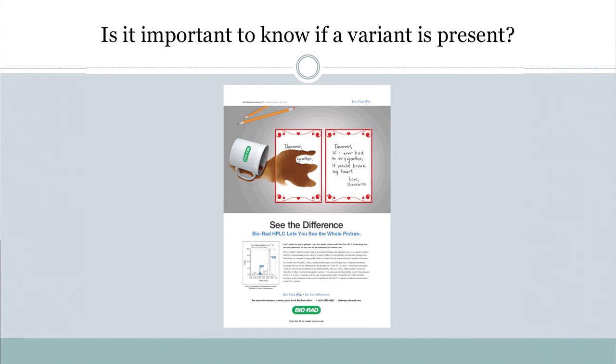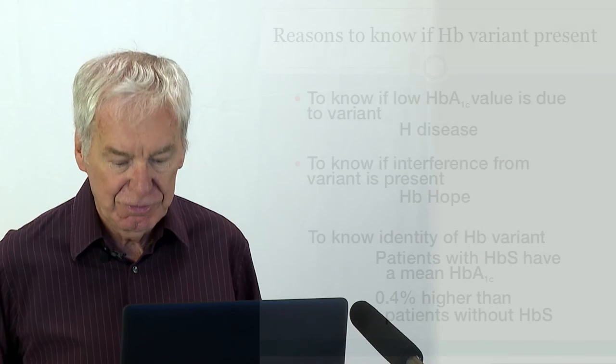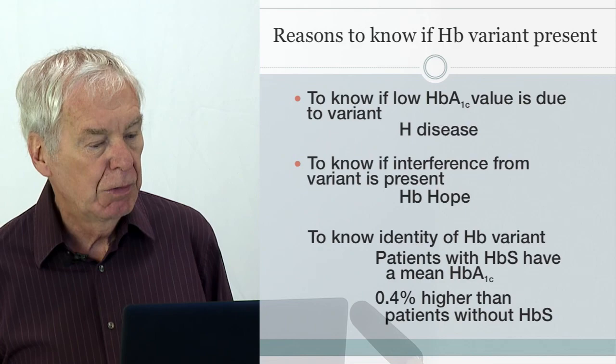The ad illustrates the very important difference in message between the left-hand side and right-hand side of the notepaper: the left says 'Sorry, goodbye,' while the right says 'I would break my heart if I ever had to say goodbye.' It conveys that it is very important to get the full picture — to know whether a hemoglobin variant is present.